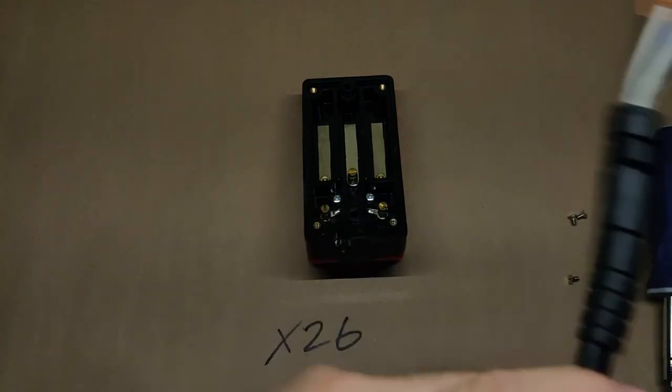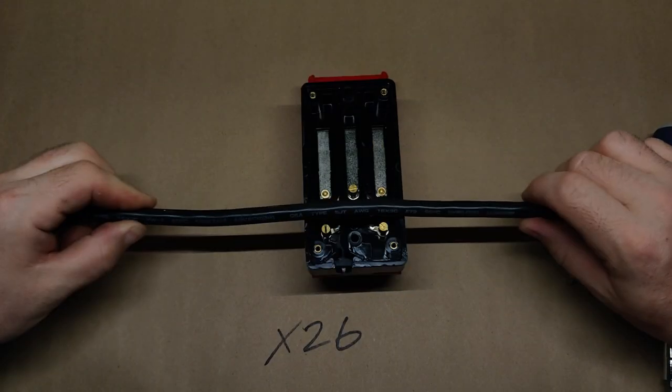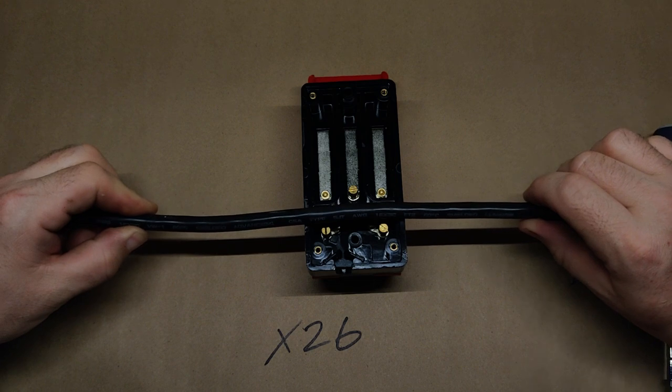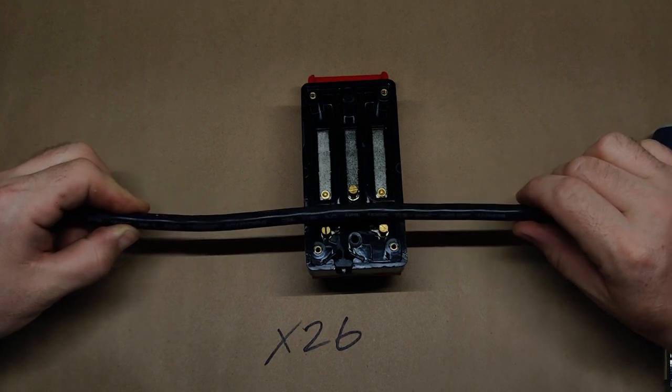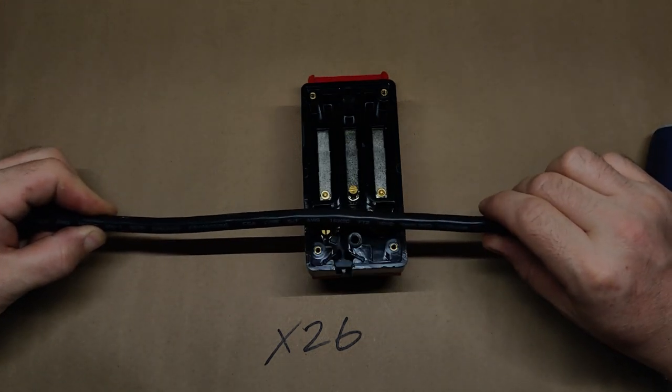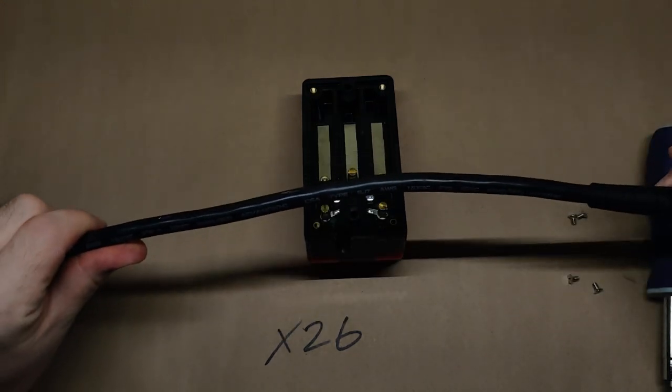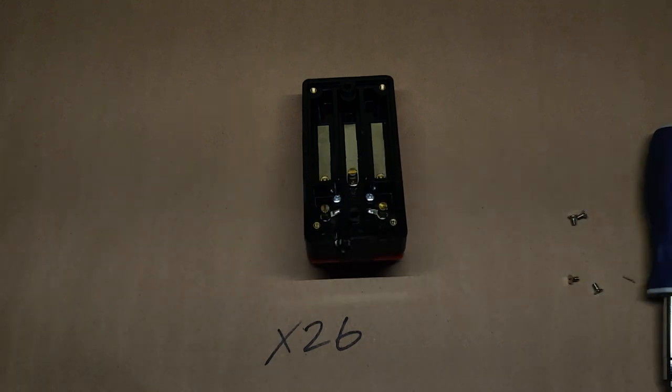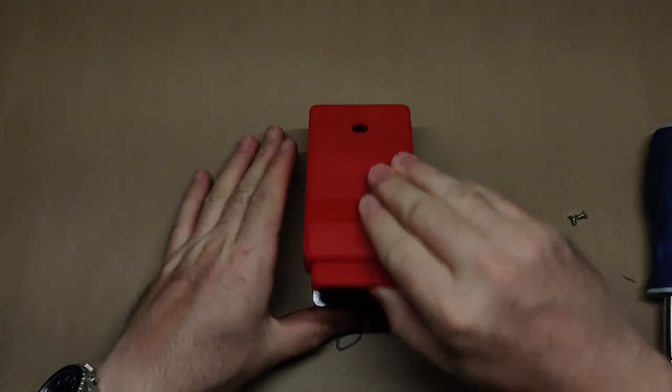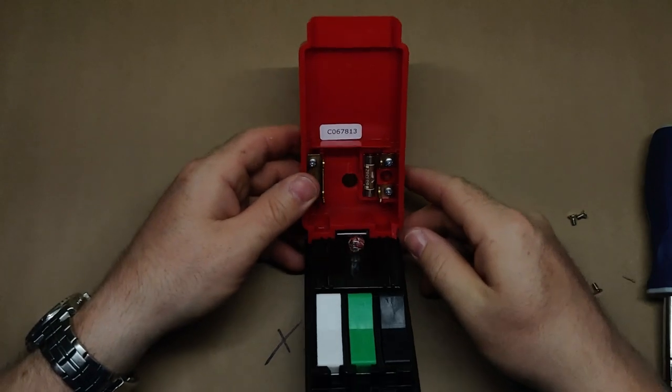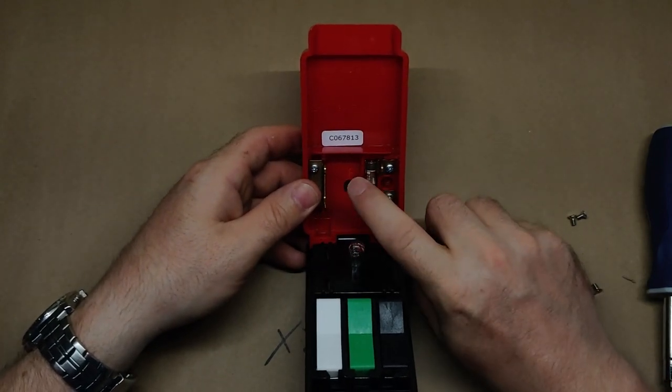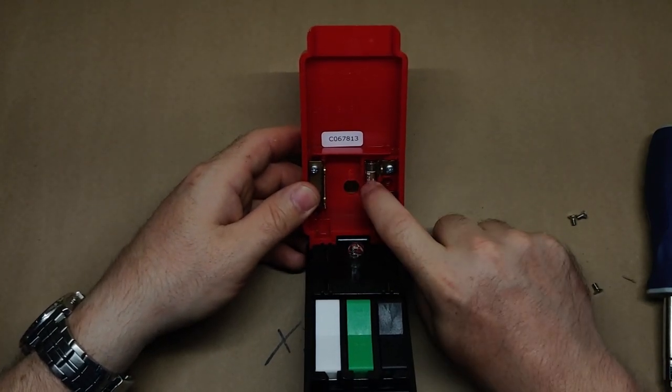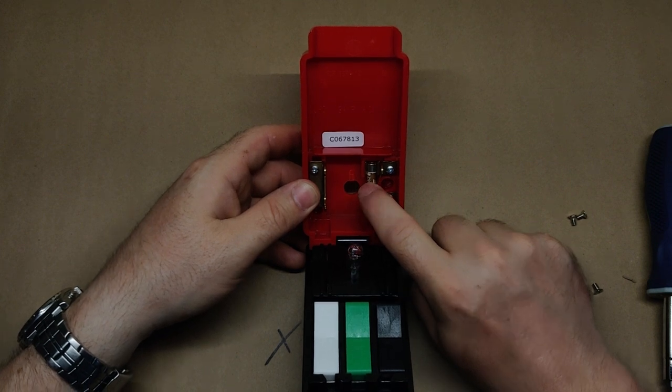This one here is upside down. This one here is an SJT. It is 16 gauge, three conductor, good to 60 degrees Celsius. This is actually quite a nice cable. Oh, one thing I should mention, is that when you are choosing a cable, make sure that you choose one that is good for at least 13 amps.